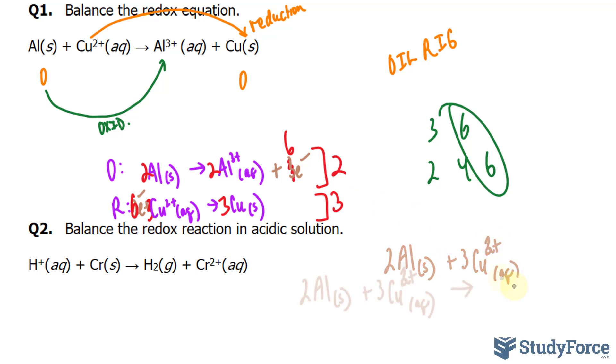And this formed all the products: 2 aluminum 3 plus aqueous state plus 3 copper solid.